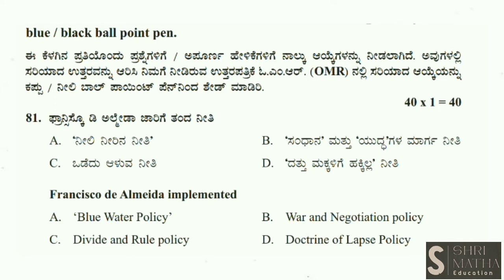Now considering the other options: divide and rule policy and war and negotiation policy are the Britishers' cunning policies. The doctrine of lapse was an expansion policy implemented by Lord Dalhousie. War and negotiation policy means when the Britishers are strong they go for war, and when they are weak they go for negotiation.